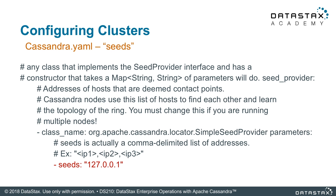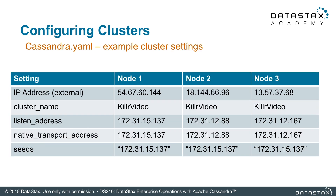Seed addresses — here we might add a small complication: double quotes. You're going to search for 'dash seeds' and then edit this field. You'll have to put your seed addresses in double quotes; if you have a list of them, separate them by commas. The seed addresses are critical because new nodes connecting to the cluster will go to one of these seed nodes to get the lay of the land.